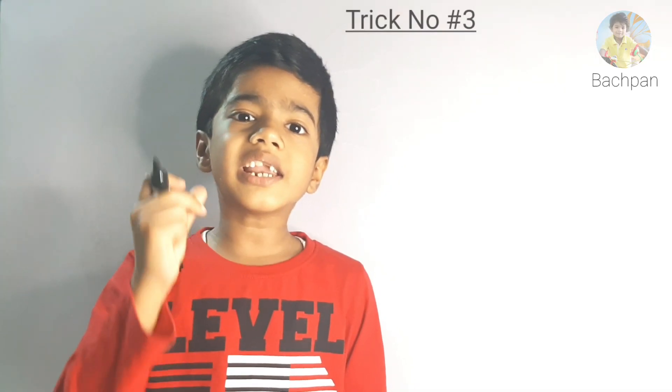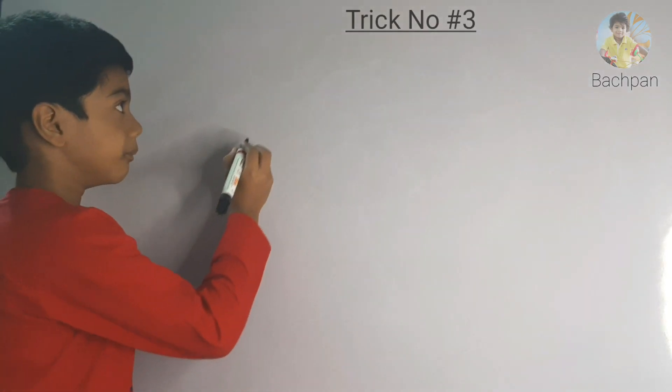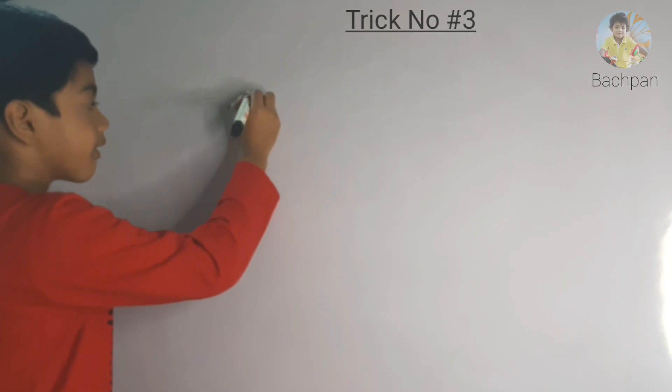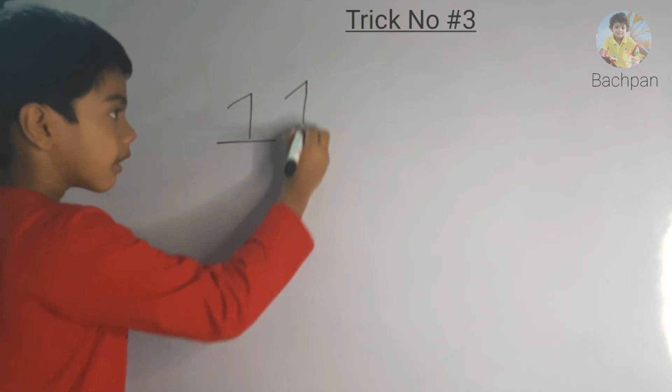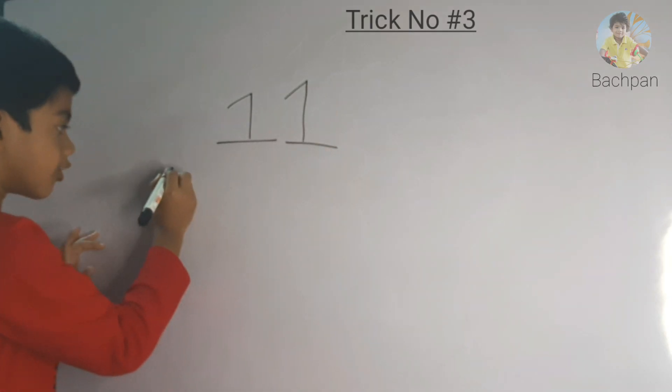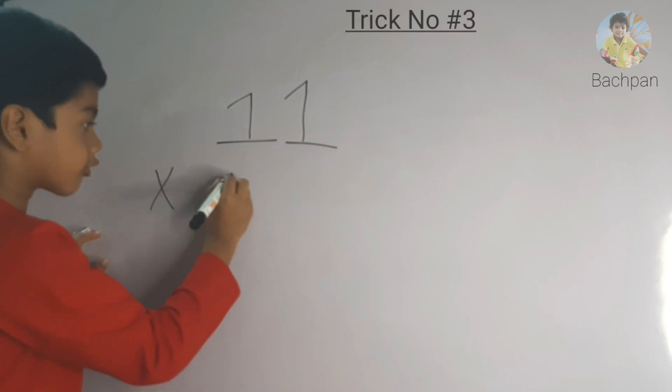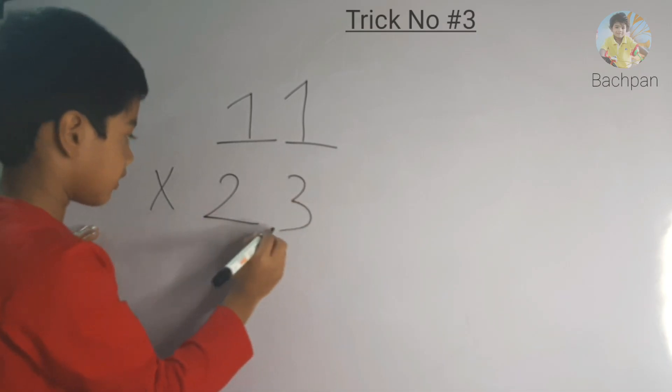Vedic math trick number 3. Multiply any 2-digit number with 11. Let's take an example, 23.